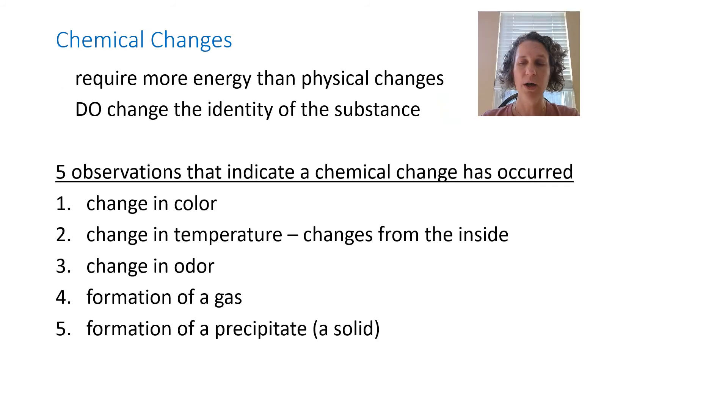Last thing: chemical changes. These require way more energy than physical changes. The reason for that is because they change the identity of the substance, which means you rearrange the particles, you change the bonds, you stick stuff back together. There are five observations, and different books have different lists, for the five observations that tell you a chemical change has occurred. First of all, change in color. If you mix two clear liquids together and all of a sudden you get like a bright yellow, like you will in some of the labs we do, chemical change. Something new is there. A change in temperature. Now this is different than the frozen potato stuff. This is where you mix two things together and it becomes warm on its own. I'm not adding heat to it. You're not putting it over the bunsen burner, you're not cooling it down in the refrigerator.